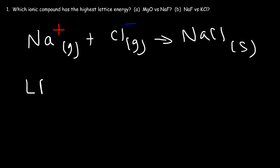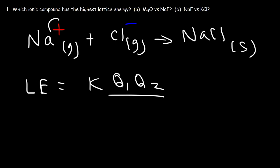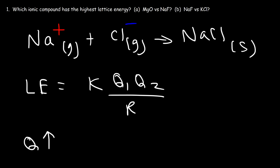Lattice energy depends on the charges q1 and q2 of the ions, and it's also dependent on the distance between the ions. As you increase the charge of the ion, the lattice energy will increase. And as you increase the distance between the ions, the lattice energy will decrease.